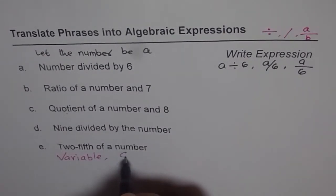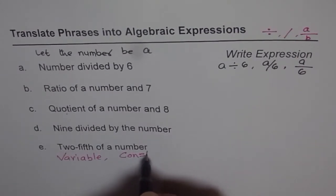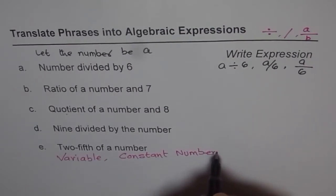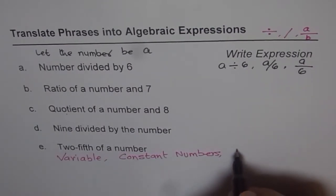We have a variable, we have constant. Constant means numbers. Constant numbers. And we have symbols.